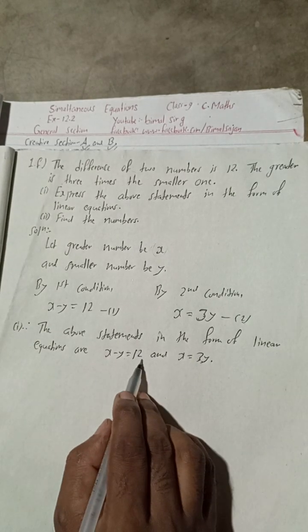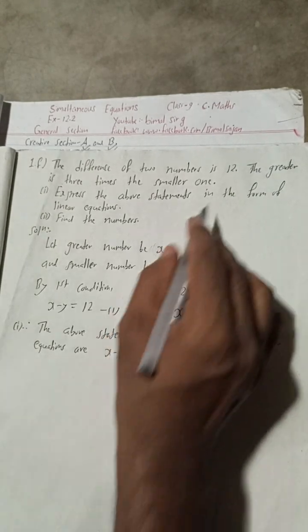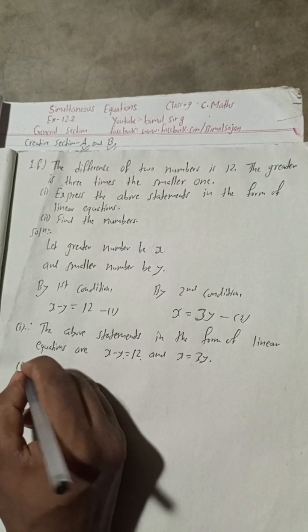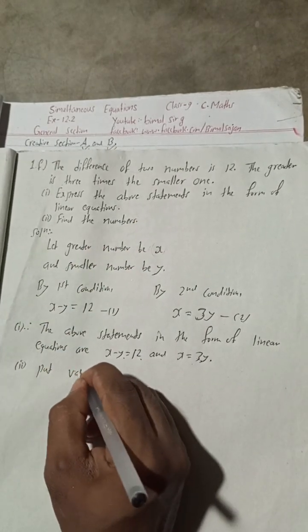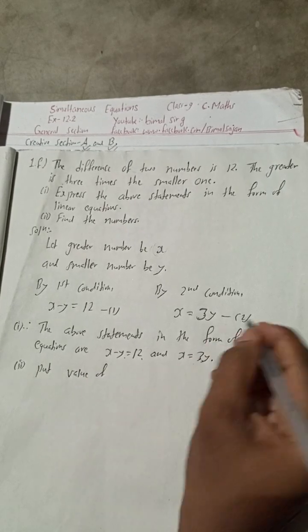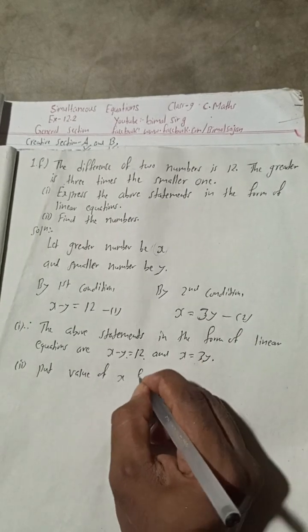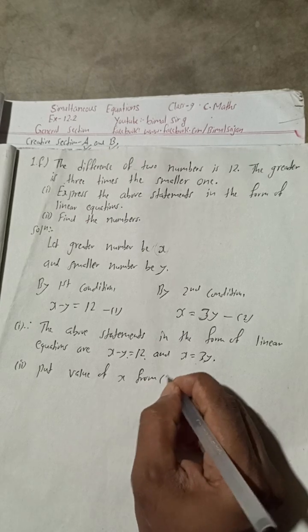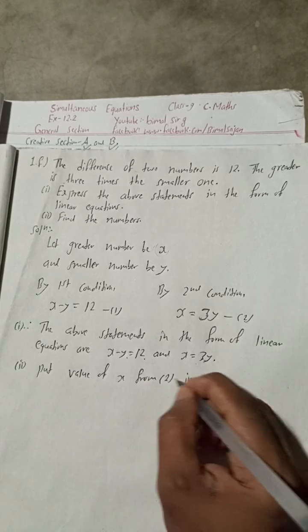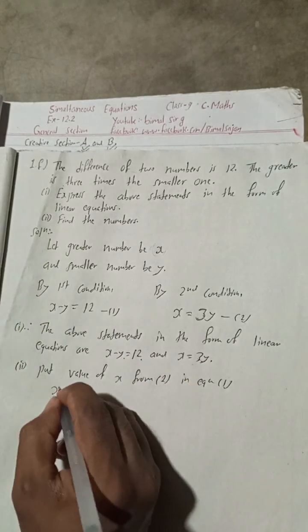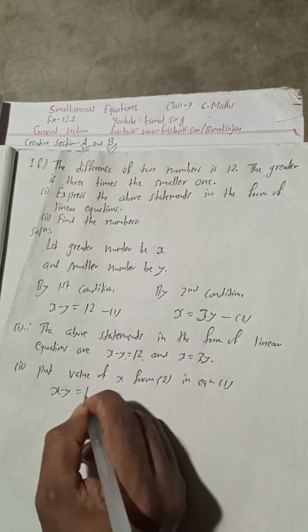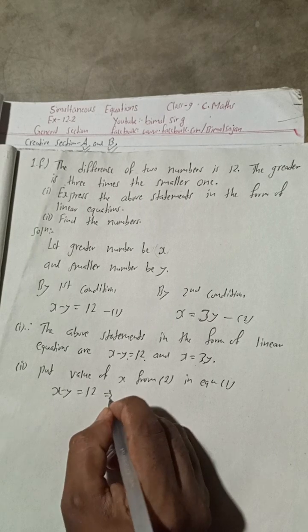Now find the numbers. Put value of x from equation 2 in equation 1. So x minus y is equal to 12, this implies: